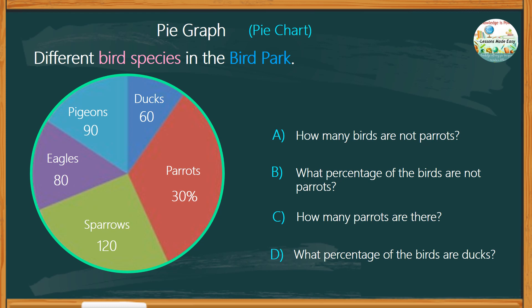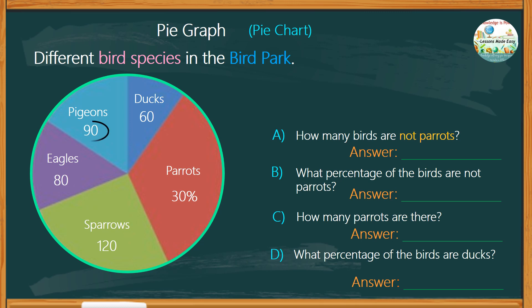You can always pause this video and take as much time as you need. If you're ready, let's go ahead and check your answers. For the first question, we need to find how many birds are not parrots. To do that, we'd simply add the number of pigeons, ducks, eagles, and sparrows: 90 pigeons plus 60 ducks plus 80 eagles and 120 sparrows. Altogether, a total of 350 birds are not parrots.